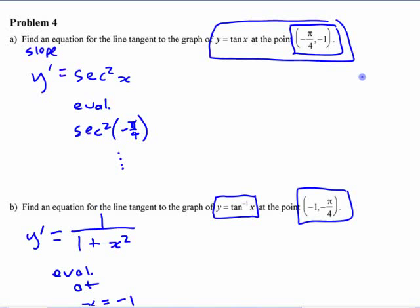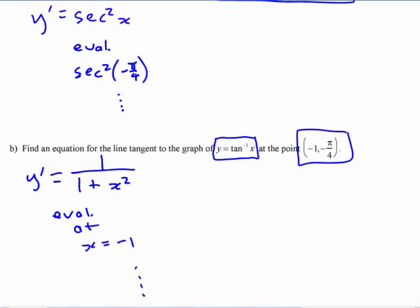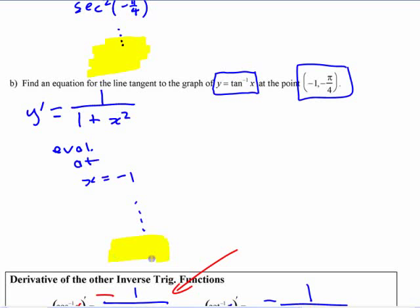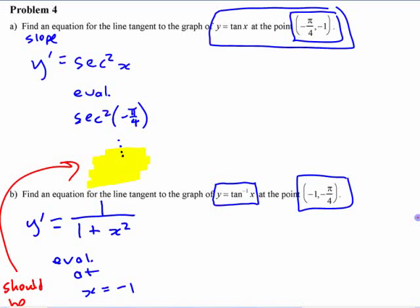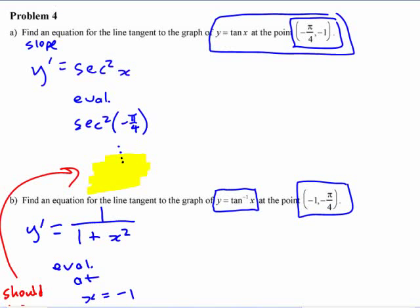They should be reciprocals, right? Whatever you get here at the end should be the reciprocal of whatever you get here, okay? Those should be reciprocals. You can put this in point slope form if you want, if you don't like the pi over 4 in there. Write it once you know the slope of the thing. Write it and just shift the line up to that place.